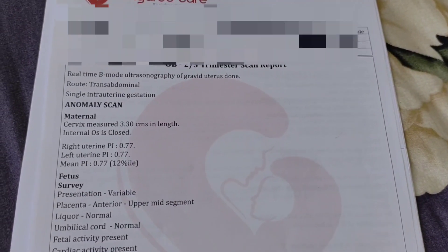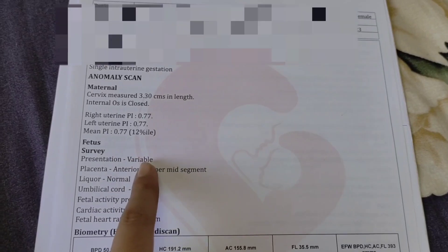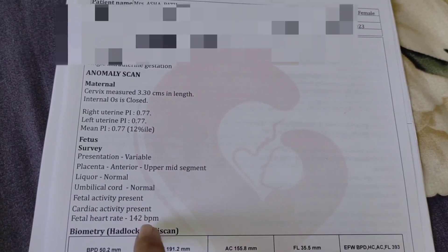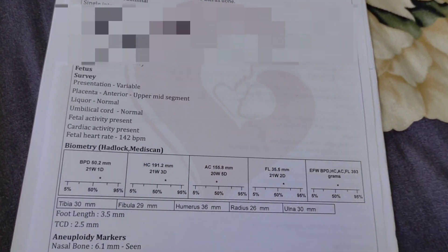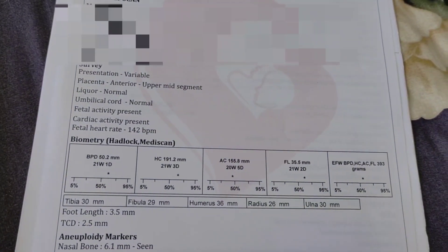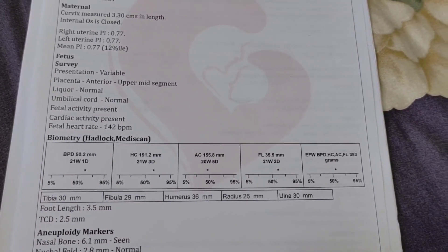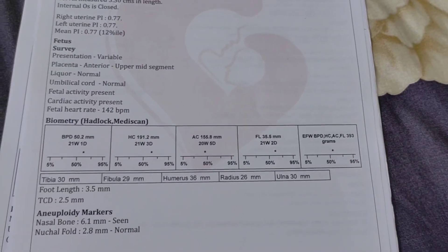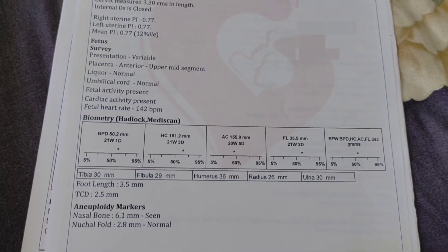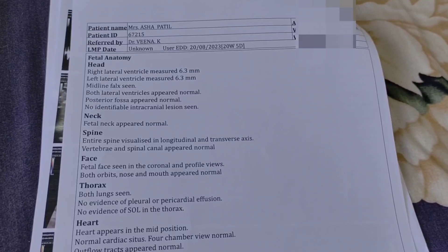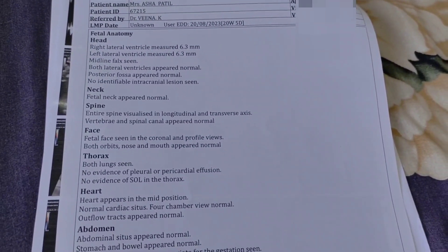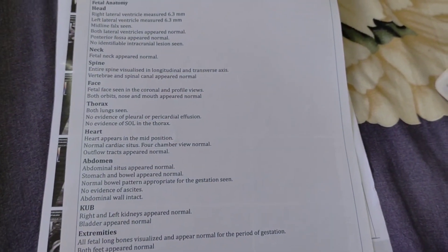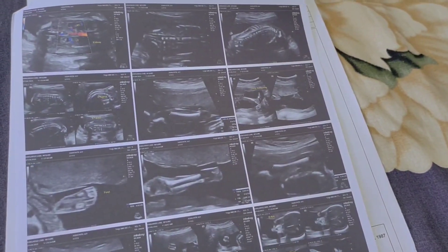This is an anomaly scan. This is a presentation variable — presentation is anterior. Heartbeat note is 142 bpm. This is a measurement of the head circumference. The baby weight is 393 grams, plus or minus 10 percent. This covers the spine, face, heart, and abdomen.